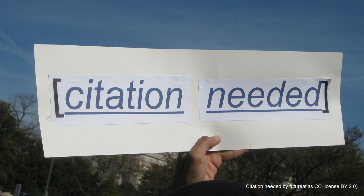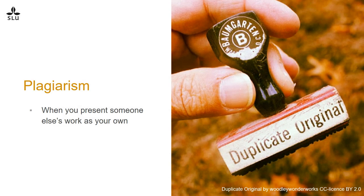So, what is plagiarism? Plagiarism is a form of cheating, which means that you present someone else's work as your own. It is considered plagiarism if you publish someone else's work in your own name, or if you use parts of someone else's work without citing the source.